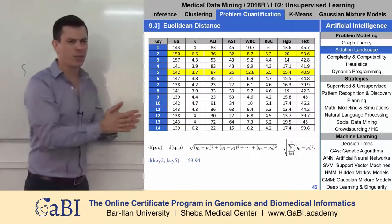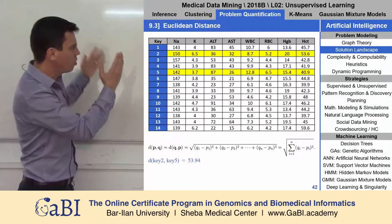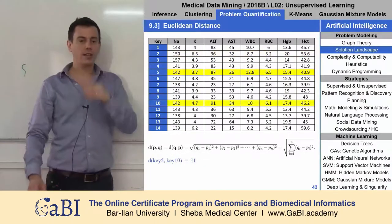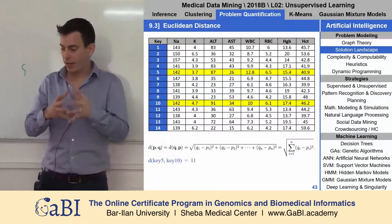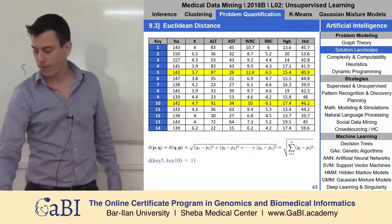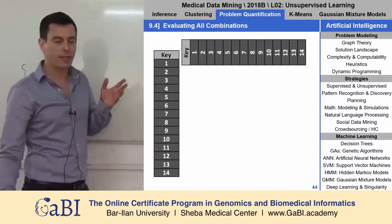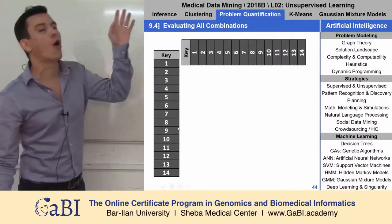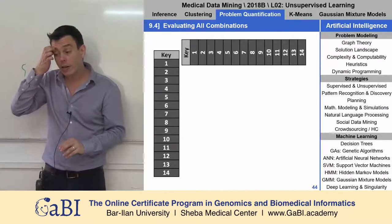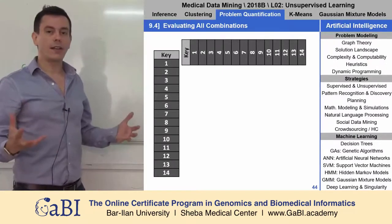Let's say we use just the Euclidean distance and we find that the distance between patient number two and patient number five is 53.94, and the distance between patient number five and patient number ten is 11. So patient five and ten are much closer to each other than patient five and two. And we can do all these measurements — what is the distance between all patients to all patients? So we do this kind of a matrix, or a half matrix, because it's transitive. Then we find all the distances.